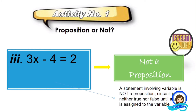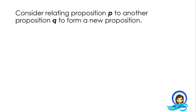In identifying a given statement as a proposition or not, just remember that a proposition is a declarative sentence, and its truth value is either true or false but cannot be both. If the given statement is an interrogative, imperative, or exclamatory sentence, it is not a proposition. Now consider relating proposition P to another proposition Q to form a new proposition.